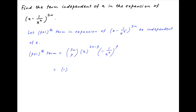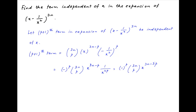This can be written as minus raised to the power p, multiplied by 3n choose p, multiplied by x raised to the power 3n minus p, divided by x raised to the power 2p. This simplifies to minus raised to the power p times 3n choose p times x raised to the power 3n minus 3p.